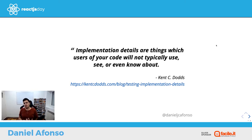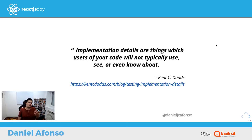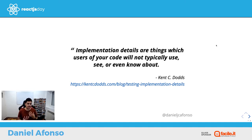Our tests were full of implementation detail testing. We were asserting things like the state of my component is x or y, or that the component received this prop. This was not how we wanted to test our components anymore, because it meant that every time we changed the component implementation — like migrating from class to hooks — our tests would fail. We wanted to start writing tests in a user-centric way.